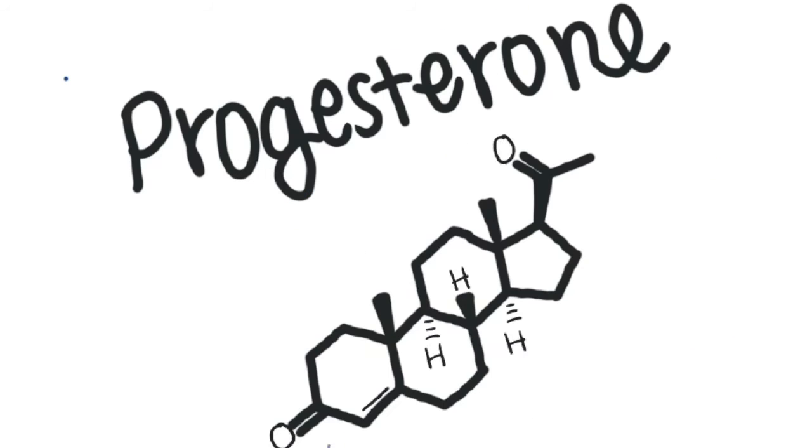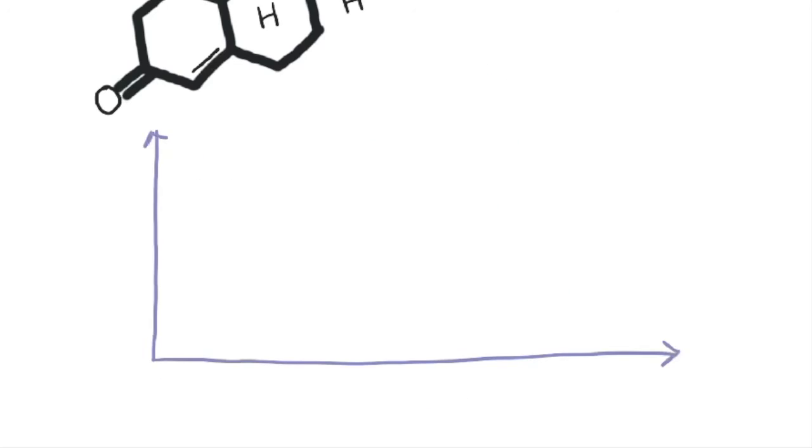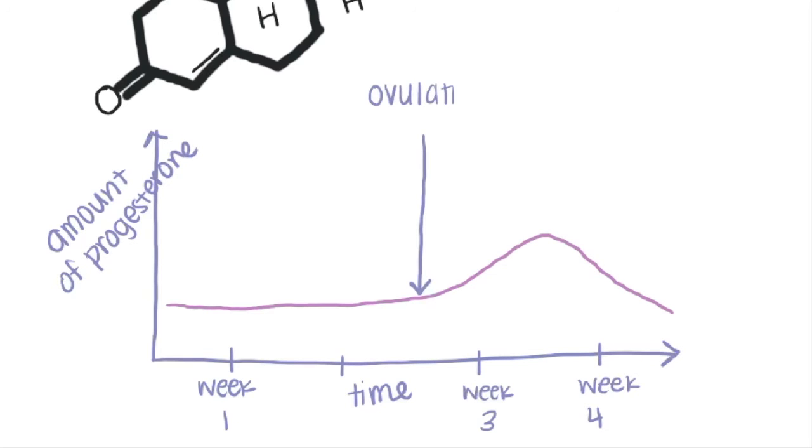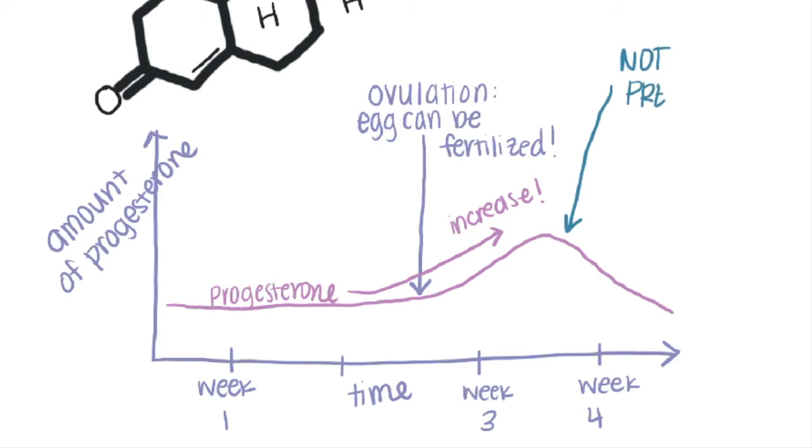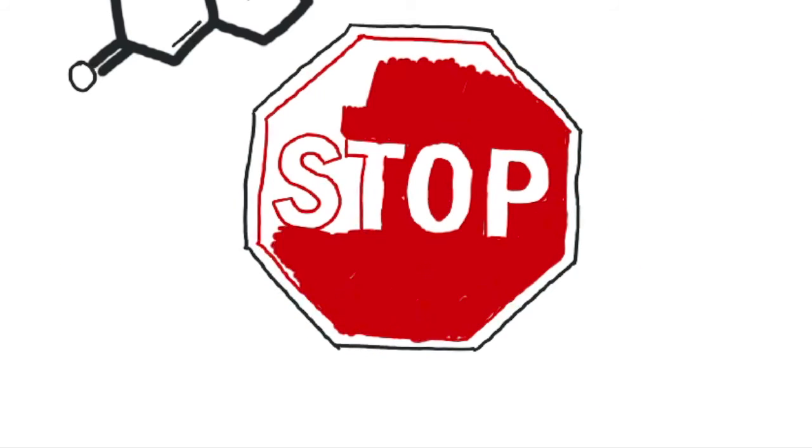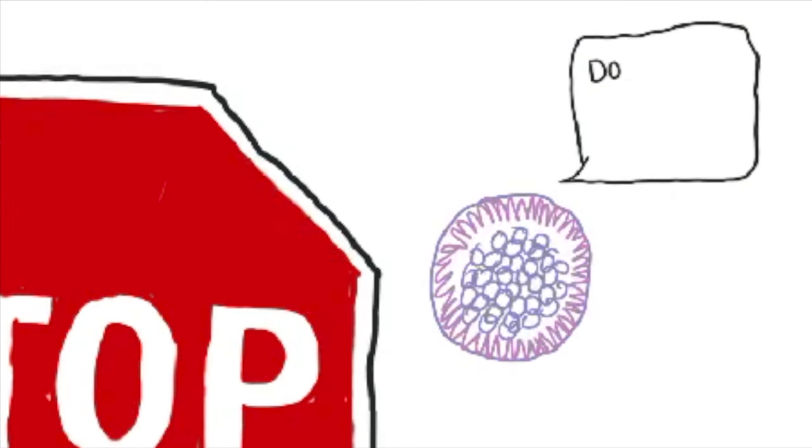If you aren't pregnant, one of the hormones associated with the uterus, progesterone, lowers significantly. Progesterone is what stops the immune system from attacking a newly fertilized egg.